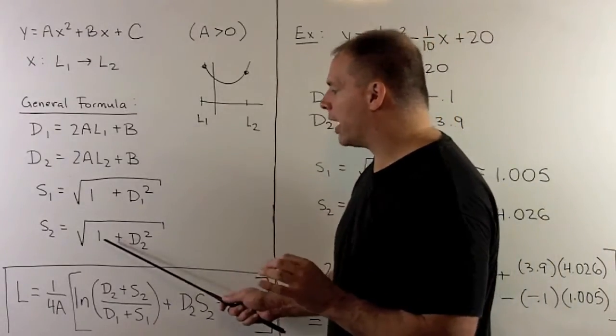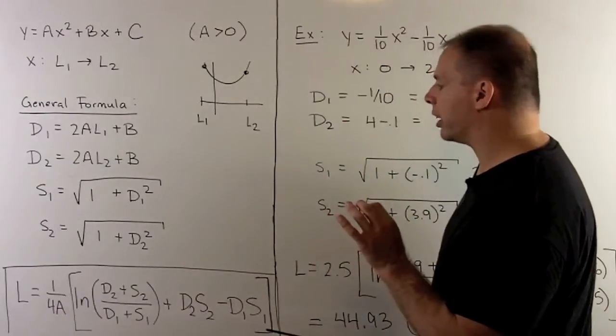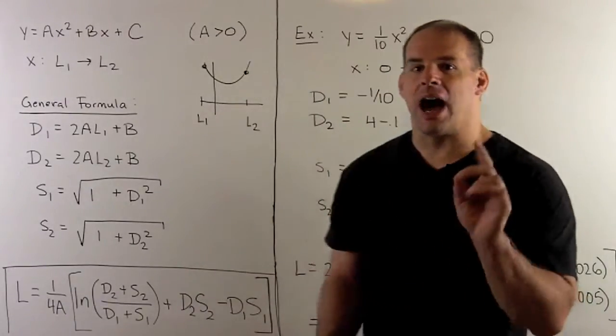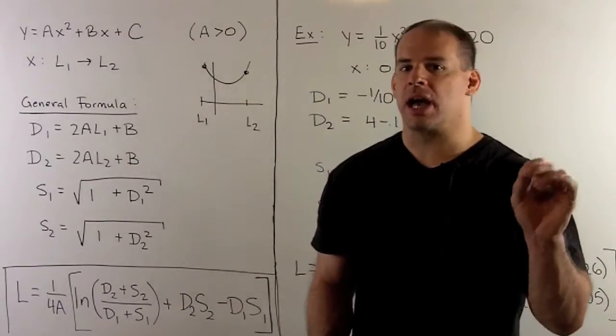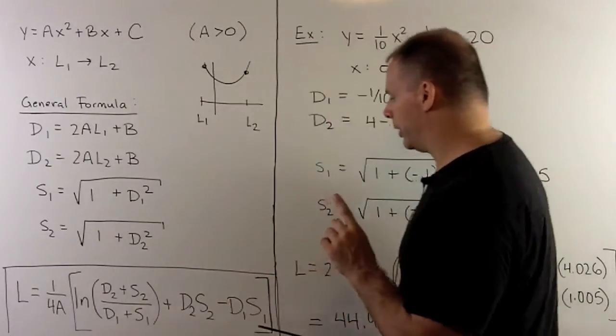This is looking like the element for arc length evaluated at the endpoints. Once we have these four items, we're going to put them into this expression here. It's complicated, but it's not as complicated as it could be. We'll explain how to get this in a little bit.